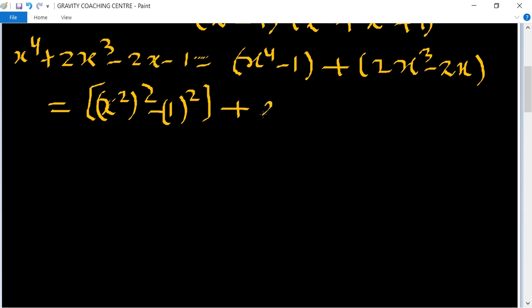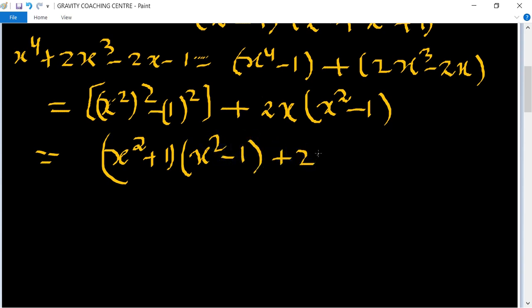A square minus b square, 2x common. So x square minus 1, and after using the identity it will become x square plus 1 and x square minus 1 plus 2x times x square minus 1.